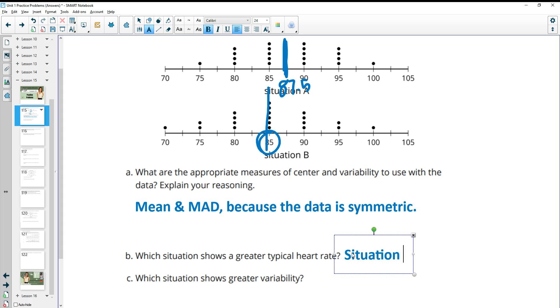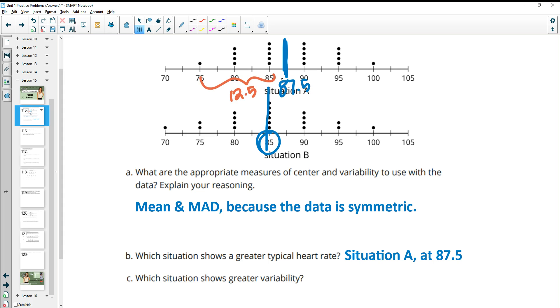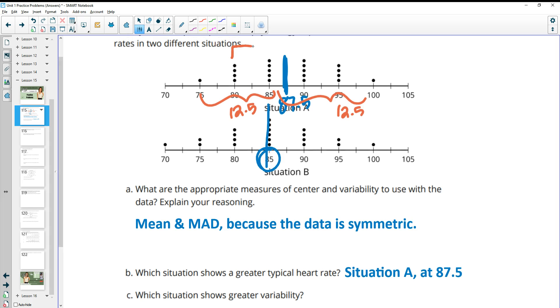So the situation with a greater typical heart rate is going to be situation A at 87.5. And then which situation shows greater variability, meaning the data is wider or more different. Here we have a lot of data right around that 87.5. We've got it out to 80, and we've only really got two numbers out further, 75 and 100, which is 12.5 away from the mean. So when we're talking about this, this is really only 12.5 away from the mean, and so is this, but most of the data is right here, only 7.5 away.